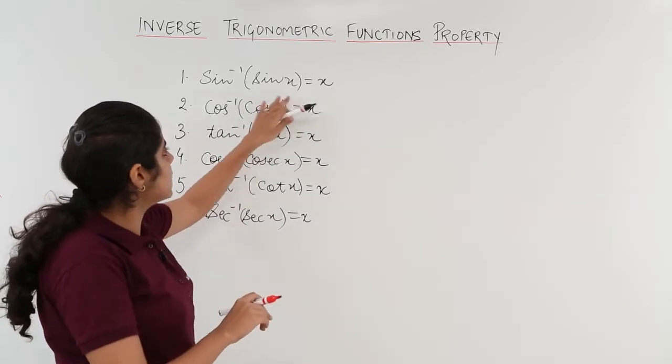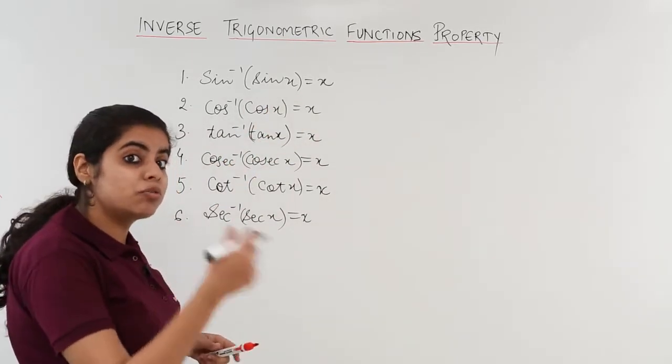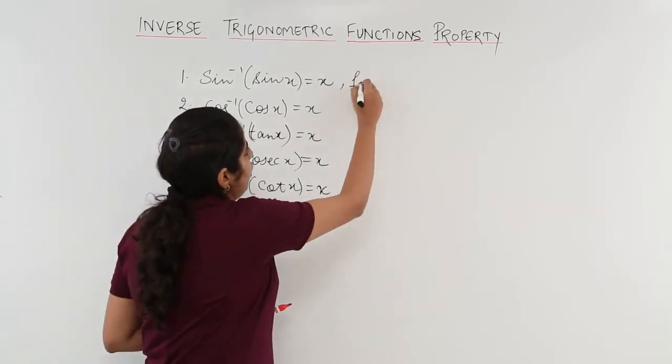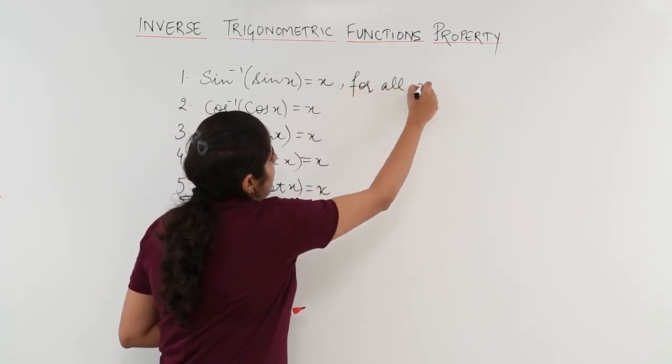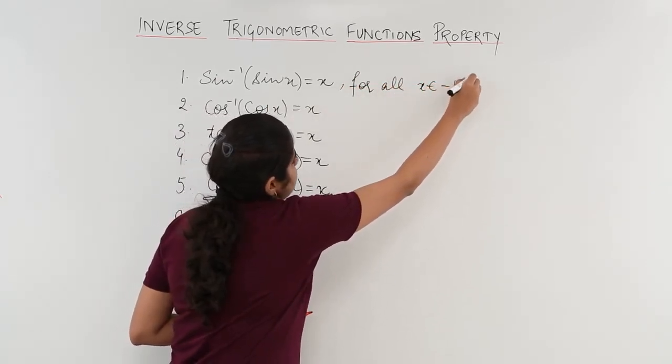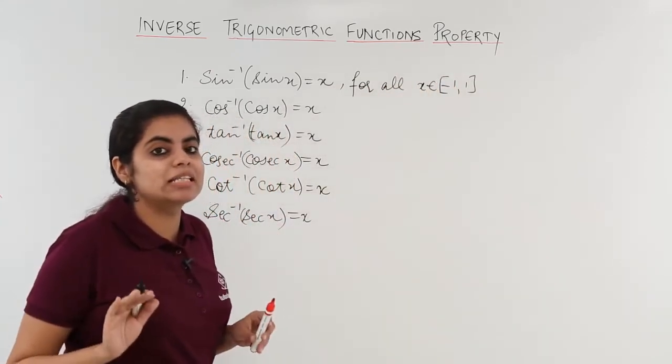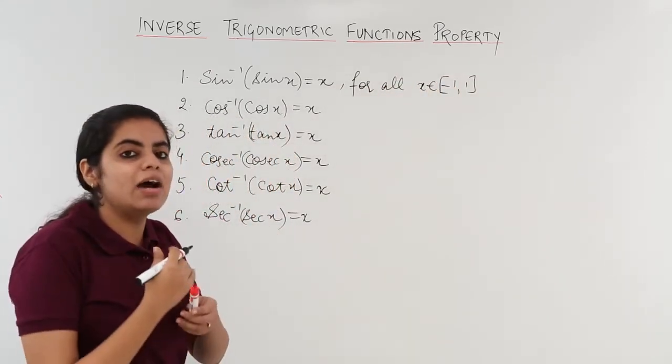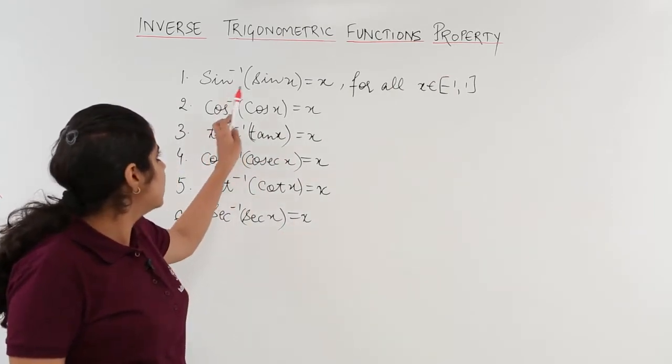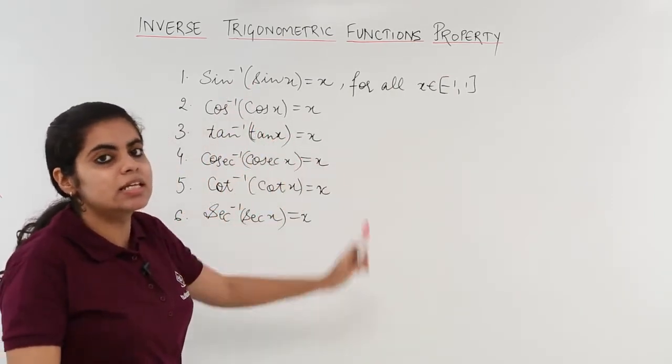Sin inverse sin x is equal to x for all x belongs to minus 1 to 1. So whenever I have x in the range of minus 1 to 1, I have to simply write sin inverse sin x as the answer is equal to x.